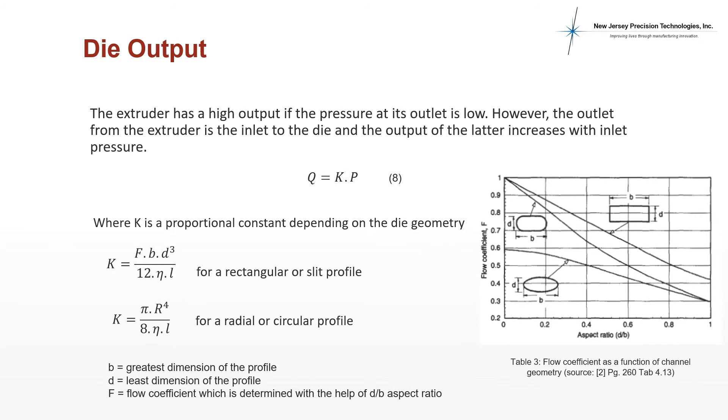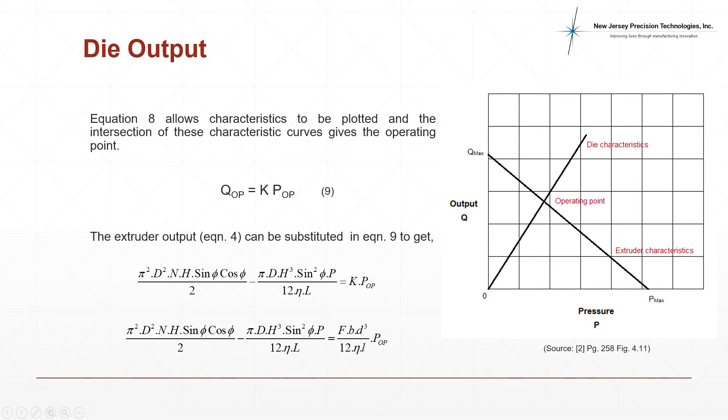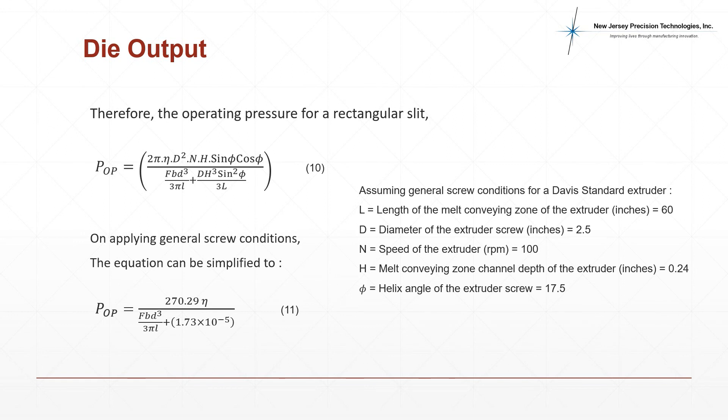The throughput from an extruder die is directly proportional to the inlet pressure and can be written numerically as equation 8. Here K is a proportionality constant that depends on the geometry of the die channel. b stands for the greatest dimension of the profile, d stands for the dimension of the profile, and f is a flow coefficient calculated based on the d over b ratio. Equation 8 can be used to plot characteristic curves between throughput and inlet pressure. The interaction of these curves gives us the operating point. The extruder throughput at the operating point can be derived by substituting equation 4 into equation 9.